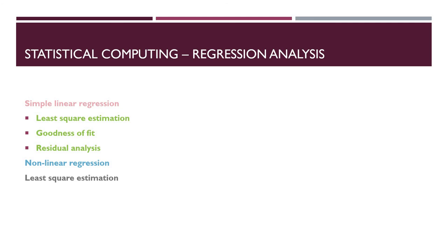Residual analysis: fitting a regression model requires several assumptions — for example, that errors are unrelated, have mean zero, and constant variance. If these assumptions are not satisfied, simple least squares may not produce an efficient regression line. It is also assumed that the order of the model is correct. It is important for practitioners to verify these assumptions and the adequacy of the model.